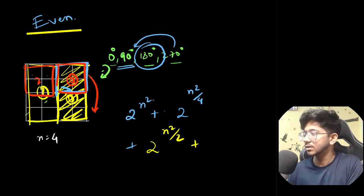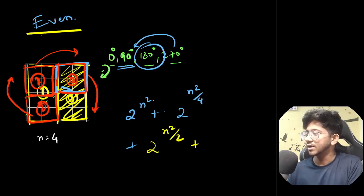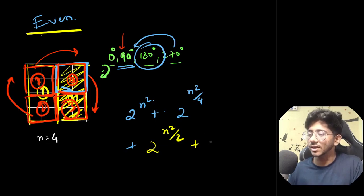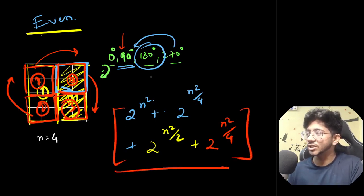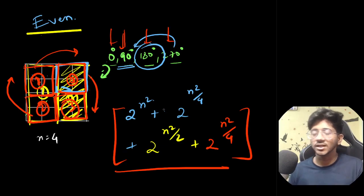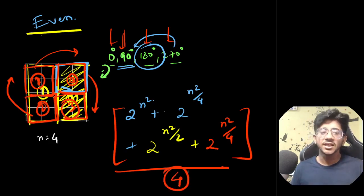So for the even case, the four terms are: 2^(n²) for 0°, 2^(n²/4) for 90°, 2^(n²/2) for 180°, and 2^(n²/4) for 270°. Since n is even, all exponents are integers. Using Burnside's lemma, we sum these four terms and divide by 4 to get the number of distinct colorings.